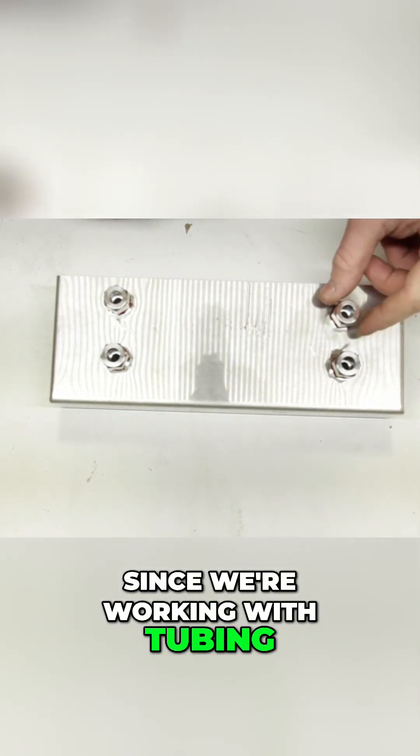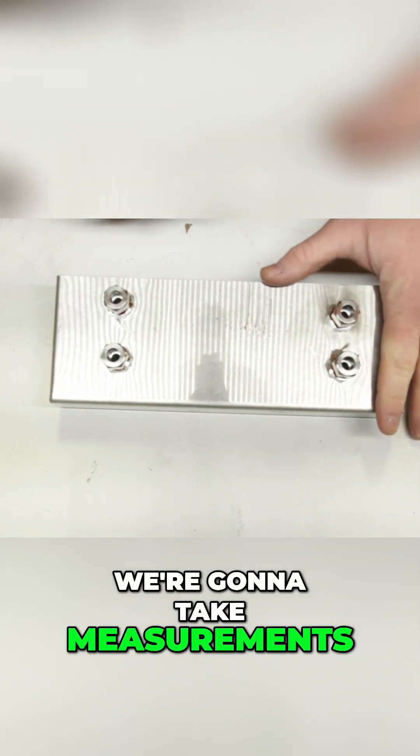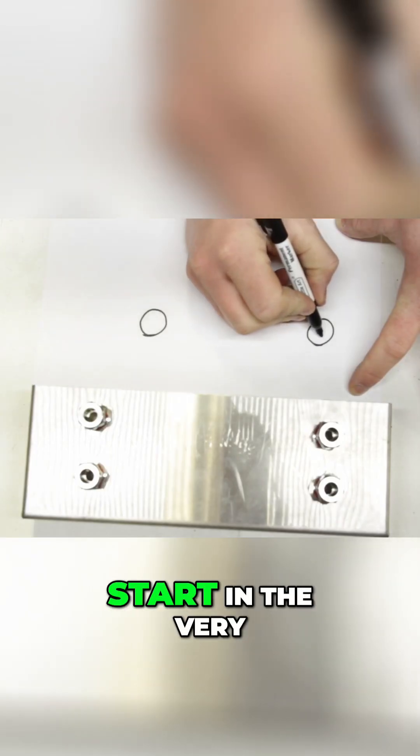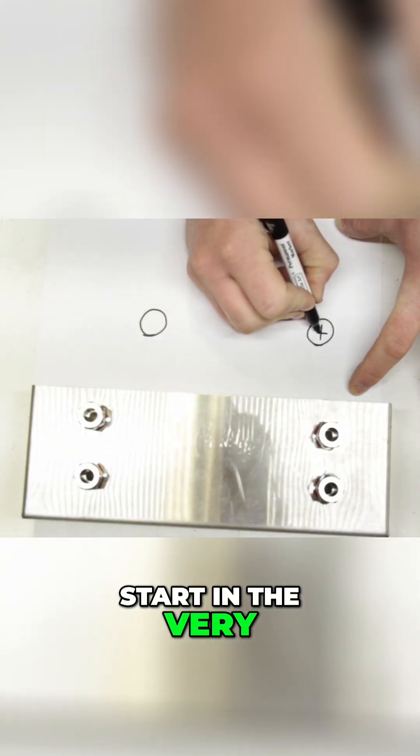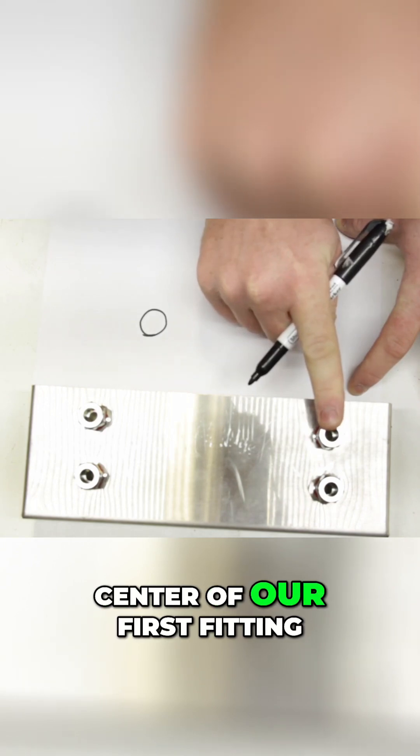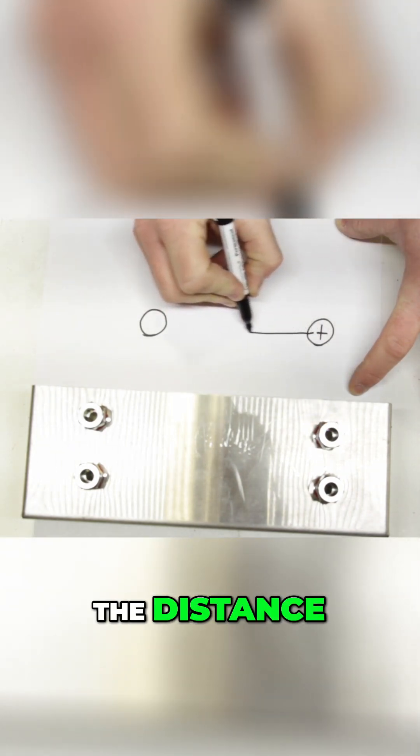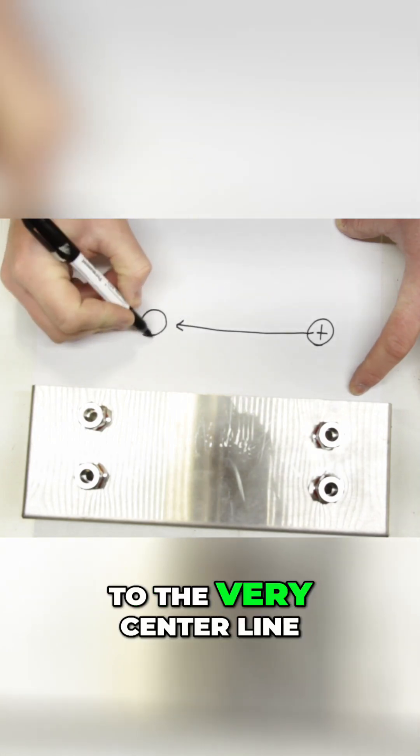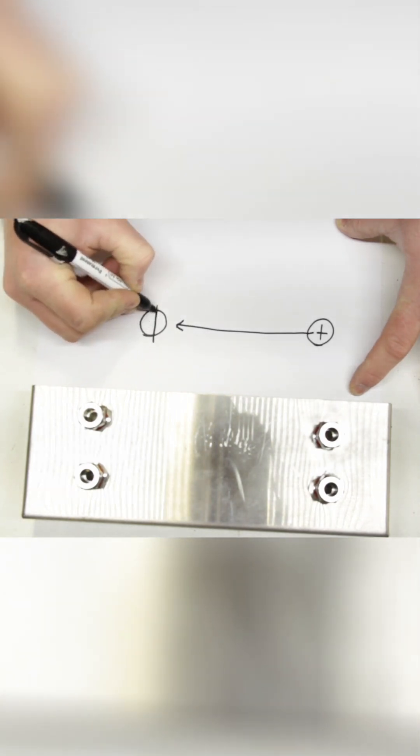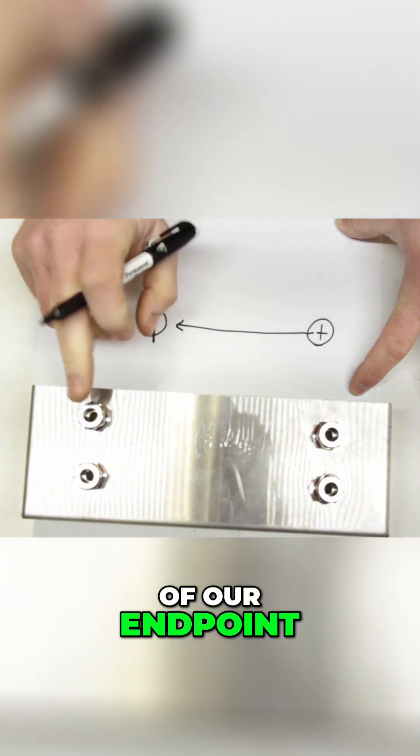Since we're working with tubing, we're going to take measurements center to center. We're going to start in the very center of our first fitting and measure the distance to the very center line of our end point, fitting number two.